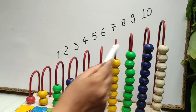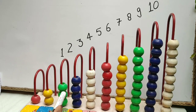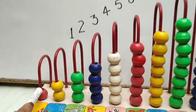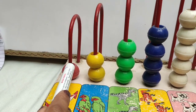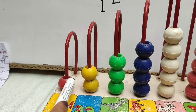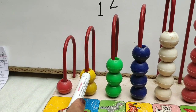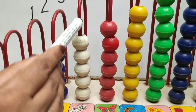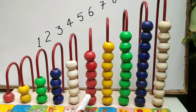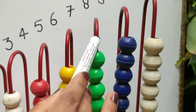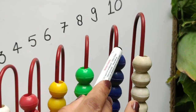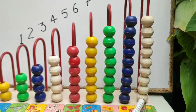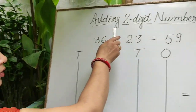The number of beads contained in each rod is equal to the number it represents. Suppose this rod represents the number one and it contains one bead. Likewise, two contains two beads, three contains three beads, four contains four beads, five contains five beads, six contains six beads, seven contains seven beads, eight contains eight beads, nine contains nine beads, and ten contains ten beads.